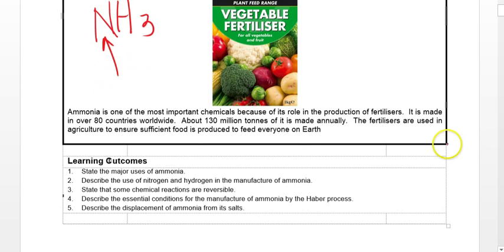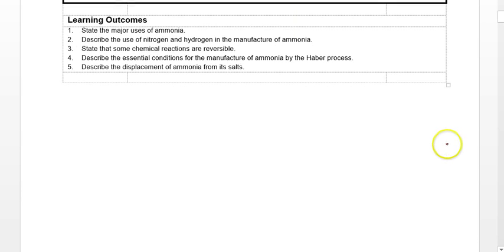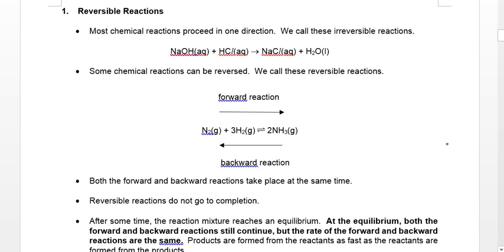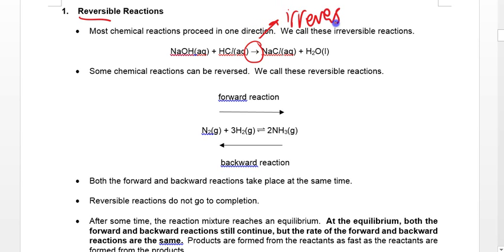This will be a pretty fast lesson because there's not much content. Before we introduce the reaction by which ammonia is made, we need to understand one concept called reversible reactions. All along, we've been doing reactions with arrows going in one direction — this is an irreversible reaction. It means reactants A and B become products C and D, and there's no way C and D can become A and B again.